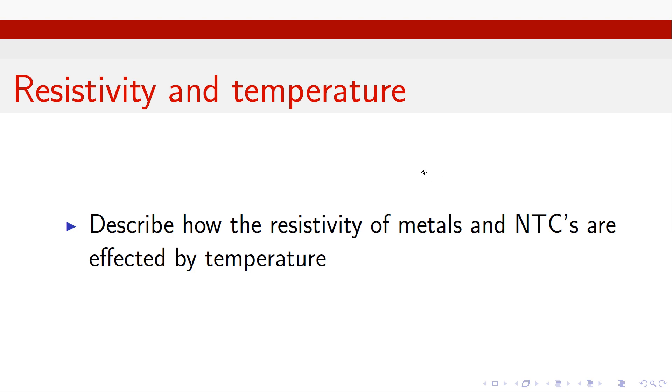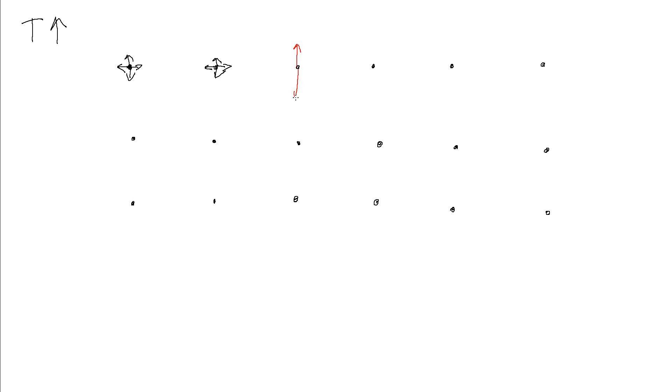When we change the temperature of materials we tend to see two dominant effects, and either one or the other tends to dominate. The first effect, which is dominant in metals, is that as we heat up the material — as temperature increases — the atoms inside the metallic lattice start to vibrate a bit more. When we increase the temperature we're increasing the kinetic energy of each atom, and they start to vibrate much more — with much larger vibrations.